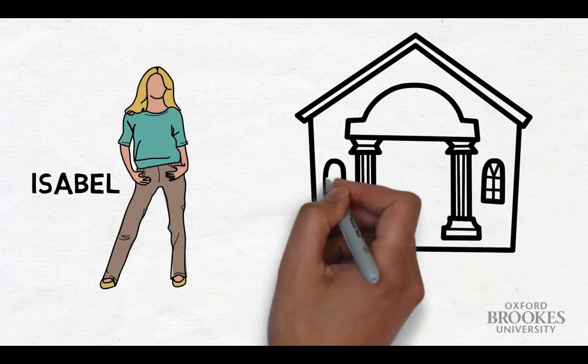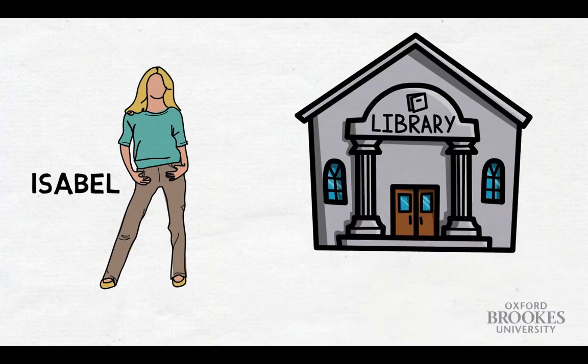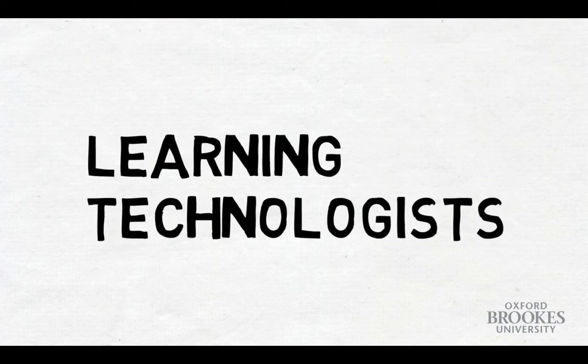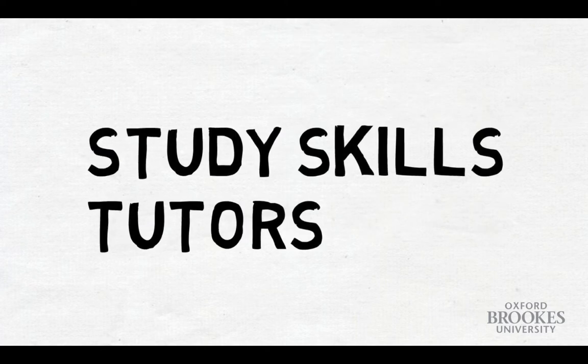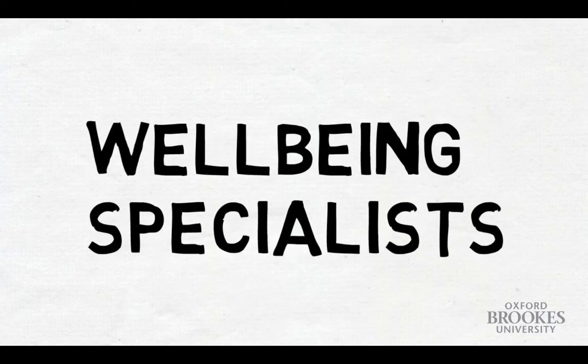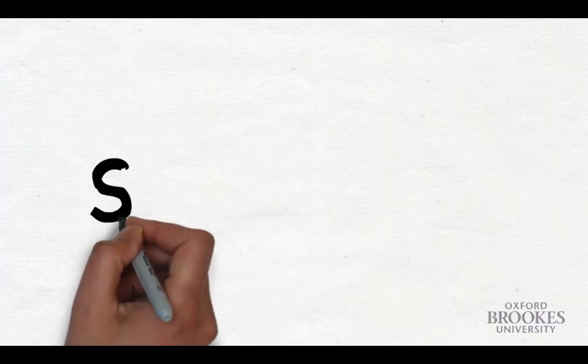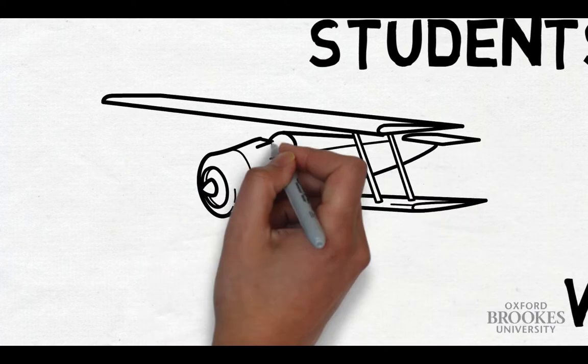My name is Isabel Virgo. I'm an Academic Liaison Librarian at Oxford Brookes University, and I recently led a project team to create an interactive Moodle resource designed to boost students' digital capabilities. The team included librarians, learning technologists, study skills tutors and wellbeing specialists. It was initiated and led from within Learning Resources, but was developed in a collaborative and student-focused way based on data collected from pilot groups.